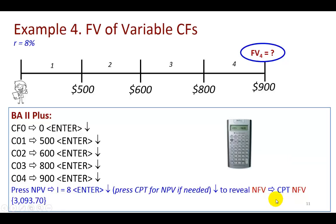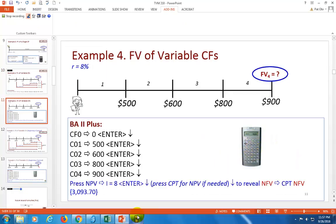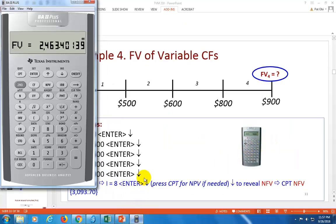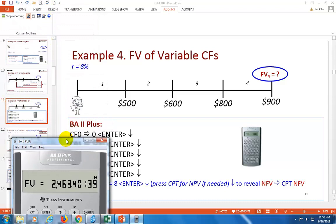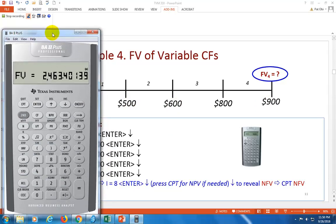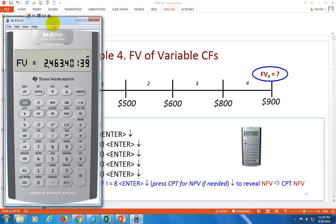But we can more easily use the BA II Plus. Notice here, I showed the icon for the professional version, because that's what we're going to have to use to perform this analysis. The student version is not equipped to calculate the future value of variable cash flows. If you don't have it, no worries, you can also use an Excel spreadsheet to accomplish some tasks.